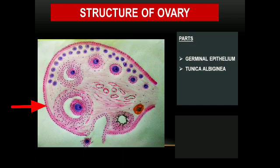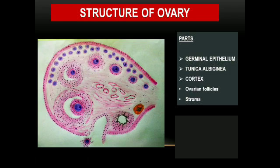This layer continues with the peritoneum of the ovary called the mesovarium. The next layer is the tunica albuginea — a thin connective tissue layer lying just inner to the germinal epithelium. In this picture, you can see the germinal epithelium and, inside that, the area where tunica albuginea is seen. The cortex lies inner to the tunica albuginea and forms the peripheral portion of the ovary.